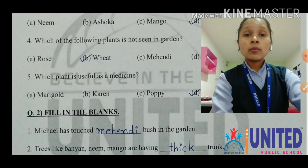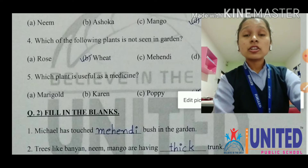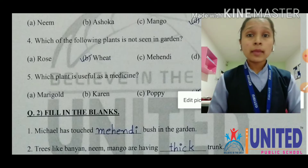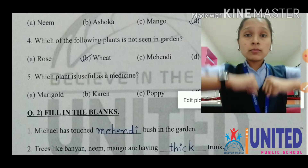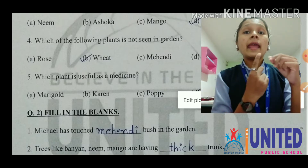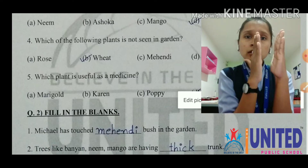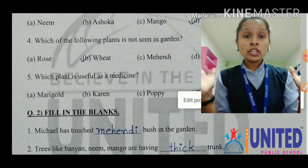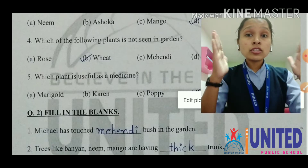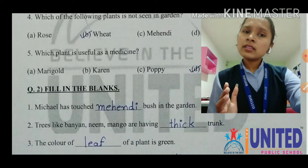Number two: trees like banyan, neem, and mango are having dash trunk. For trunk, there are two things — some trees have a thick trunk, which is the fat one. Banyan tree, neem tree, and mango tree all have thick trunks.